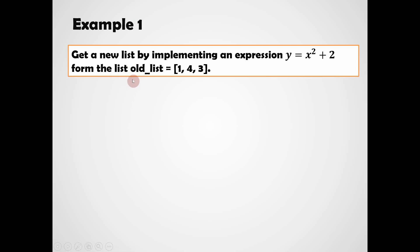Now we see some examples. In example one, we have a list named old_list with elements 1, 4, 3. We need to get a new list using list comprehension by implementing the expression y = x² + 2, where x is each element in the old list. We have to get a new list with elements generated by this expression using the elements present in the old list.